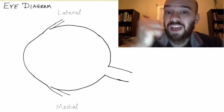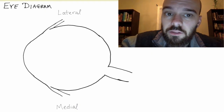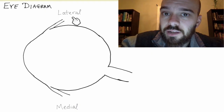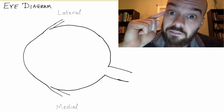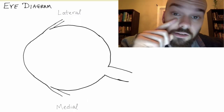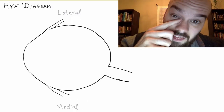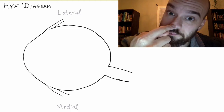Lateral means toward the outside of the body, so this top section here is actually this side of the eye, and the medial section down here is going to be the inside of the eye closest to the midline.